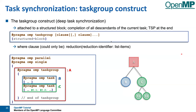With taskwait, you only wait for direct children. What if you want to wait also for grandchildren and all descendants in the ancestry tree? This is where taskgroup becomes handy. Within the curly braces of a taskgroup, if you create tasks — regardless at which level in the ancestry tree — the taskgroup is a logical wrapper around all those tasks. At the closing curly brace, the taskgroup construct waits for all tasks created within those curly braces until they are completed. This is where you can have a rather large set of OpenMP tasks that you can wait for.